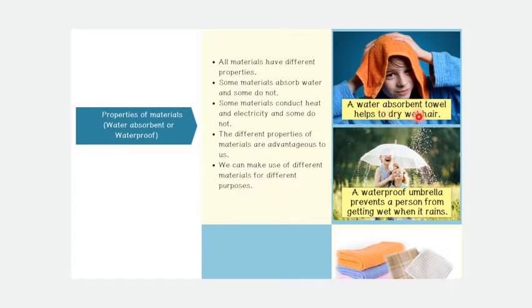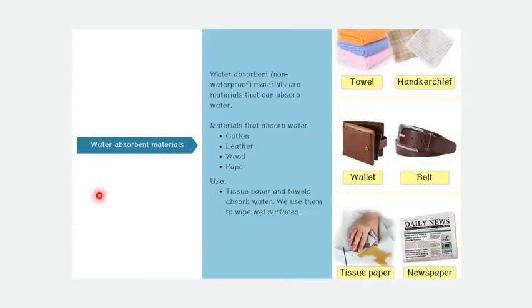A water absorbent towel helps to dry wet hair. A waterproof umbrella prevents a person from getting wet when it rains. Water absorbent materials, non-waterproof materials, are materials that can absorb water. Materials that absorb water, such as cotton, leather, wood, and paper. Tissue paper and towels absorb water. We use them to wipe wet surfaces. Towel, handkerchief, wallet, belt, tissue paper, and newspaper are water absorbent materials.